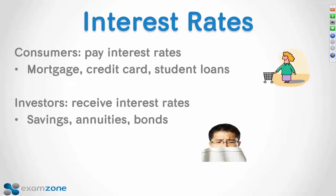Fixed income investors view interest rates differently from consumers. Consumers taking out a credit card or mortgage like low interest rates; the Fed stimulates the economy by artificially lowering rates to help people buy homes or cars. However, as an investor or saver, the higher the interest rate the better. With rates still fairly low, it's good for consumers but rough for fixed income retirees — your annuity may only pay 1% or your Treasury notes only 2.5%, well below the 5% you planned on.